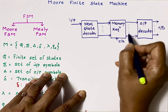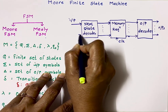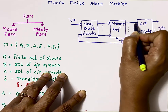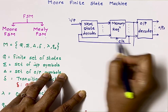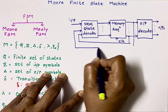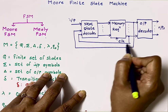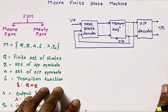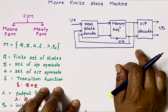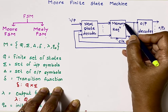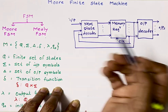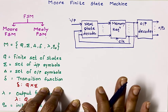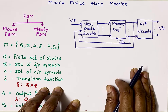The output of the memory element is fed back to the next state decoder. This is the block diagram of Moore Finite State Machine. In Moore FSM, output depends on present state only. But in case of Mealy FSM, output depends on present state as well as present input. That is the basic difference between Mealy and Moore FSM.